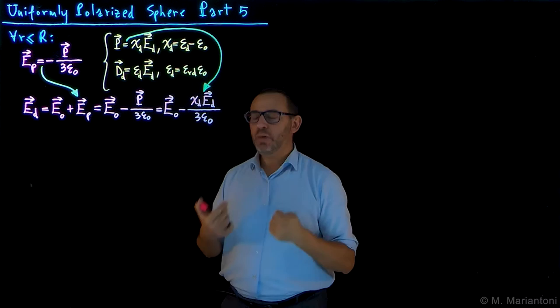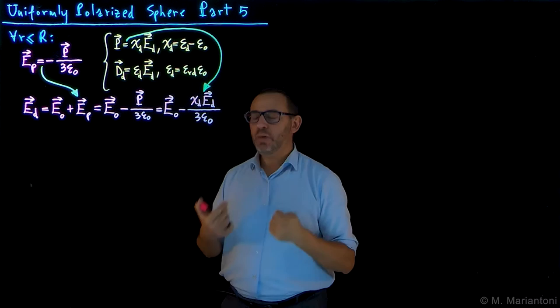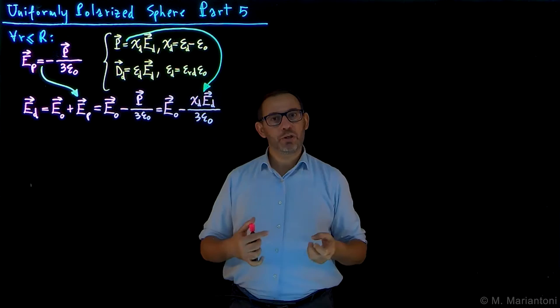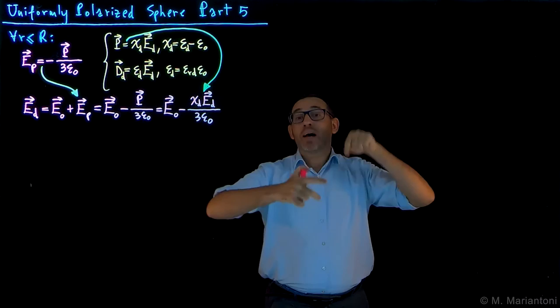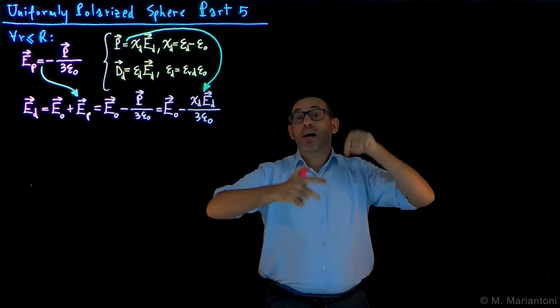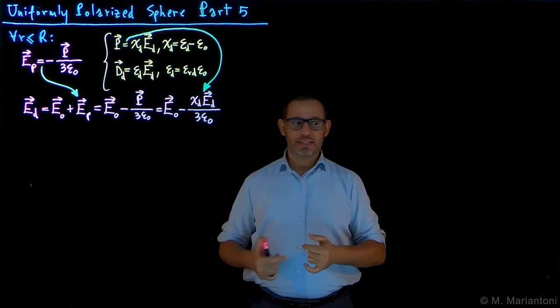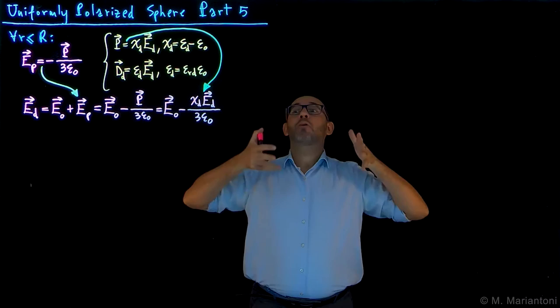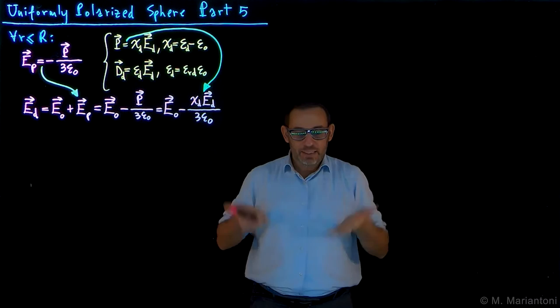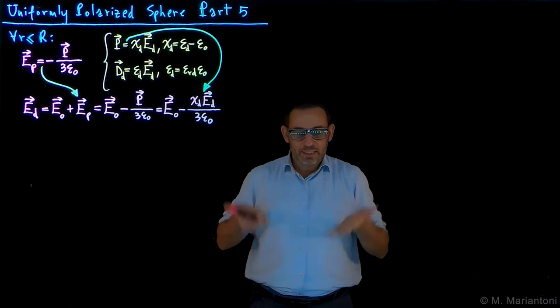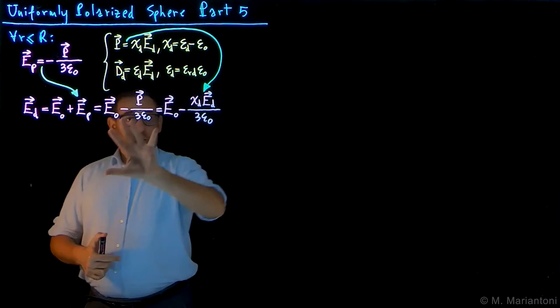The aim of the self-consistent method is to find E_D as a function of E0, D_D as a function of E0, and P as a function of E0. The handle we have as experimentalists is E0, because what we really control are the free charges on the conductors. We inject free charges by applying potential differences, related by capacitance, effectively tuning the field E0. So the aim is to find all fields in the dielectric — P, E_D, and D_D — as a function of E0.